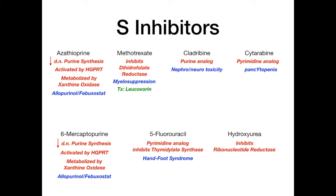So those are all the drugs in the four cell cycle categories. There's one more category — the anti-tumor antibiotics — which don't fit neatly into the four phases. These are identifiable because their names sound like antibiotics: doxorubicin and daunorubicin (considered one drug for USMLE/Comlex purposes) and bleomycin.